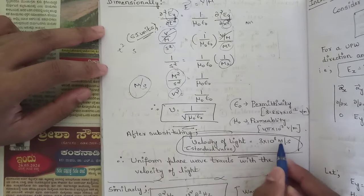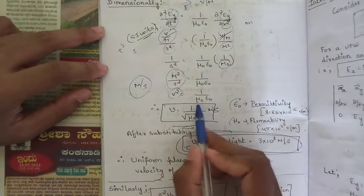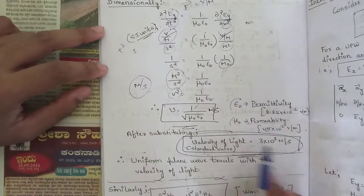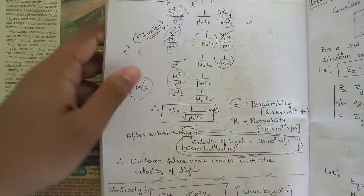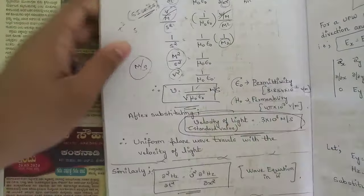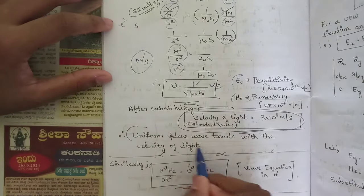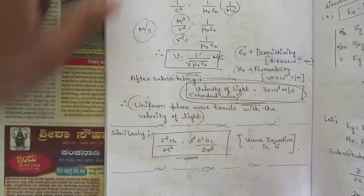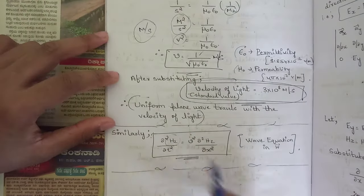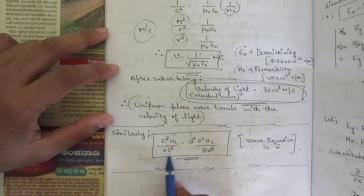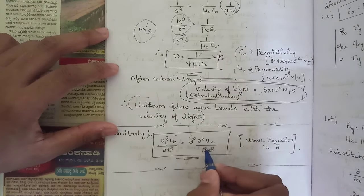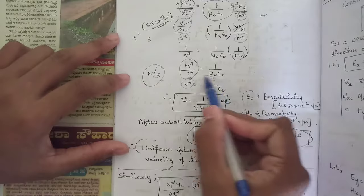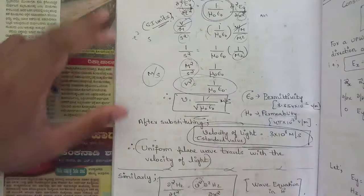Therefore v equals 1 by square root of mu naught epsilon naught. Substituting the fixed values of mu naught and epsilon naught gives the standard velocity of light: 3 times 10 to the power 8 meters per second. So we can say that a uniform plane wave travels with the velocity of light. Similarly, replacing Ey with Hz gives the wave equation in terms of magnetic field: dou² Hz by dou t² equals v² times dou² Hz by dou x².